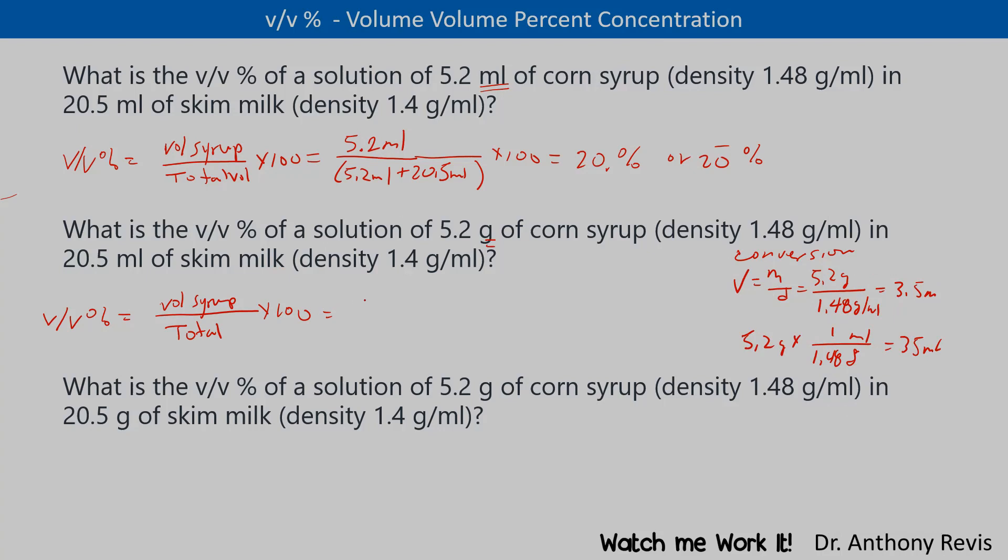Therefore, we put this in our formula as 3.5 ml of corn syrup. And we need the ml of corn syrup plus the 20.5 mils of milk for the total volume, times 100. And if we punch that through our calculator, we will get 15%. And that's a 15% volume-volume calculation.